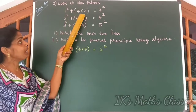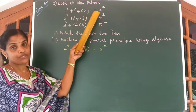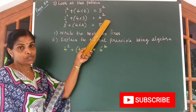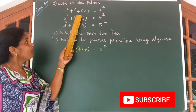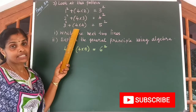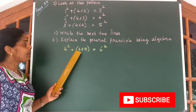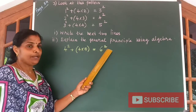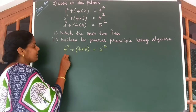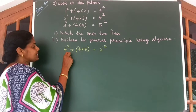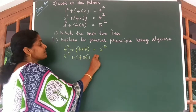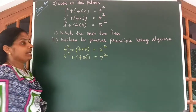You have a pattern: 1 square plus 4 into 2 equals 3 square; 2 square plus 4 into 3 equals 4 square; and so on. By looking at this pattern we can very easily write: 4 square plus 4 into 5 is equal to 6 square, and the next line: 5 square plus 4 into 6 is equal to 7 square.